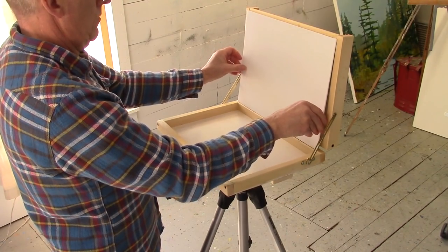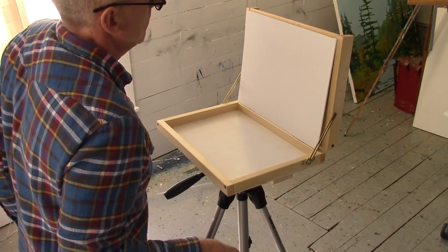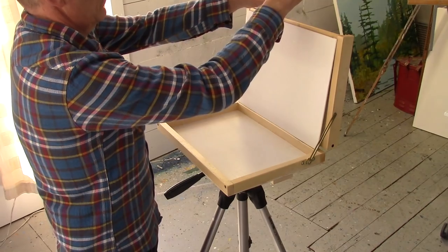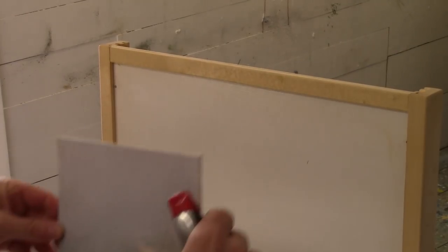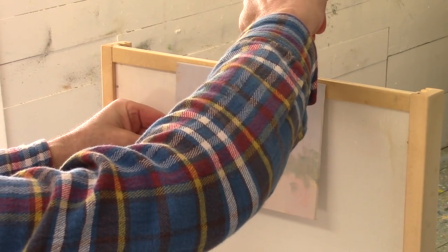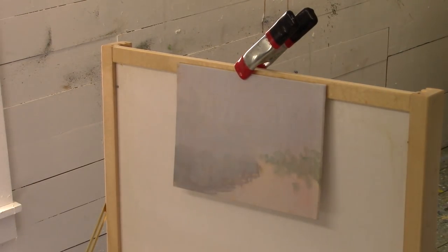A canvas panel is held in place with a simple spring clamp. Or if you're using a smaller panel, that can also be held in place with a spring clamp.